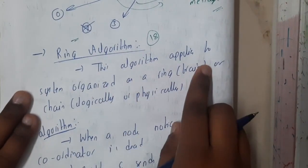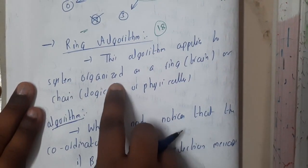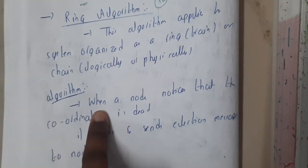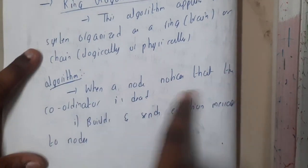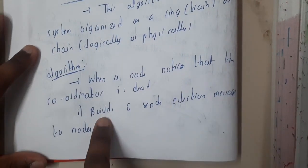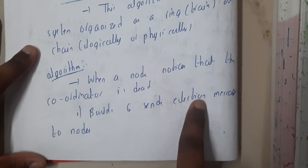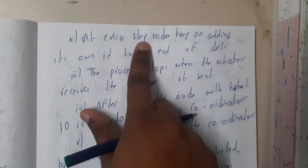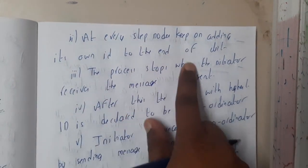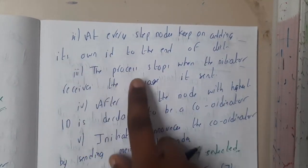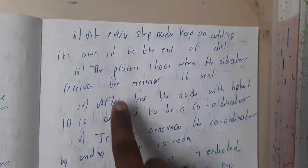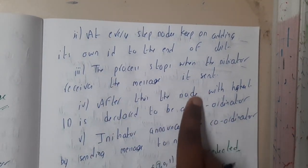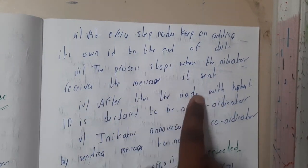This algorithm applies to systems organized as a ring, train, or chain. The algorithm states that when a node notices that the coordinator is dead, it builds and sends an election message. At every step, nodes keep adding their own ID to the end of the list. The process stops when the sender or initiator receives the message it sent.